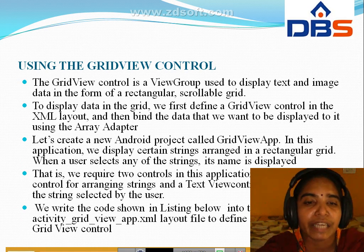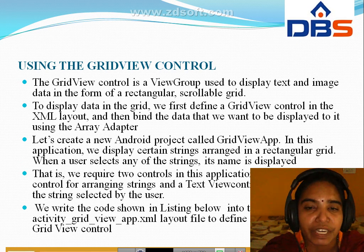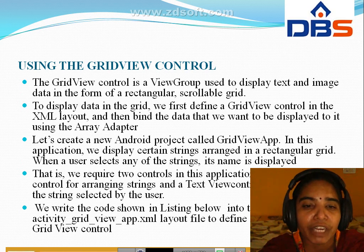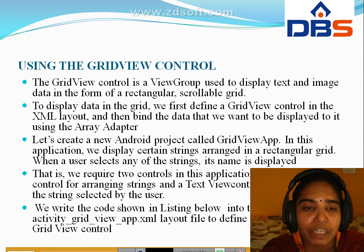Next point: let's create a new Android project called grid app. In this application, we display some strings arranged in a rectangular grid. We require two controls: grid view control — used for arranging strings — and view control for displaying strings selected by the user.